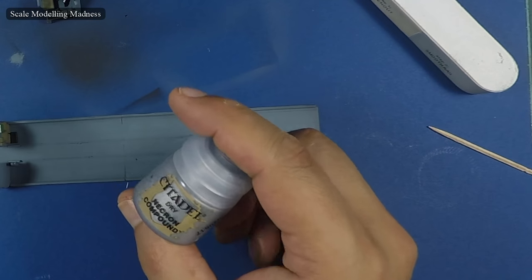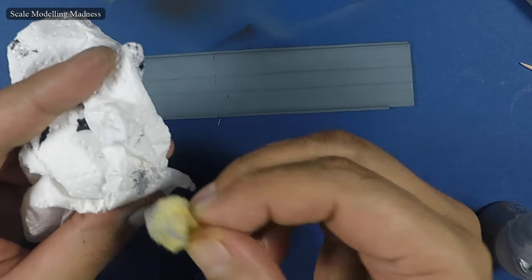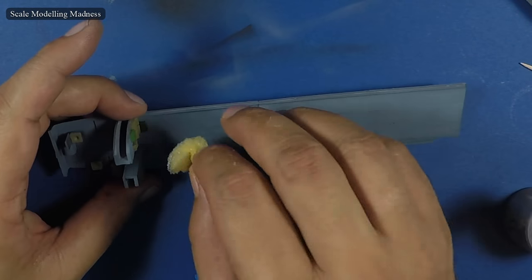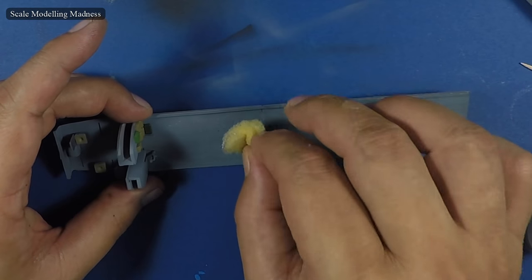I will now use this Citadel Dry Necron Compound which actually stands for Silver Paint for Dry Brushing to do some sponge chipping. I focus on the floor and the edges as these are the places most likely to see more wear and tear.